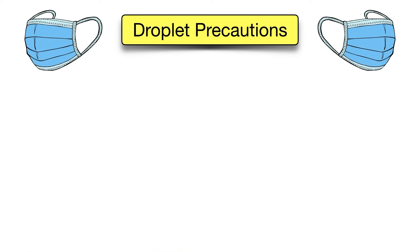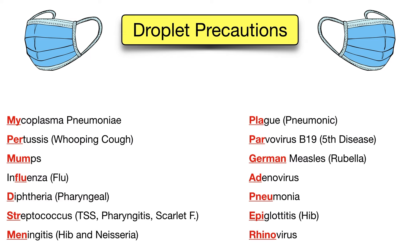So we've learned MTV for airborne precautions and ABCDEF for contact precautions. Now let's walk through the final transmission-based category, which is droplet precautions. Let's first look at the diseases that require droplet precautions, because unfortunately there are a lot of them. The infections that require droplet precautions include mycoplasma pneumoniae, which can cause a pneumonia commonly known as walking pneumonia.